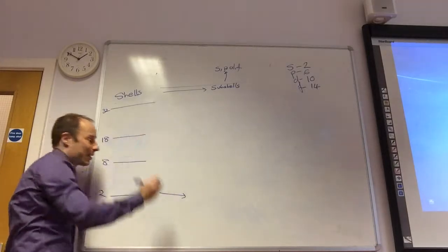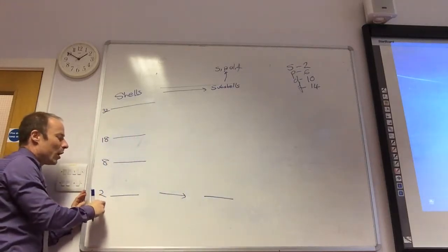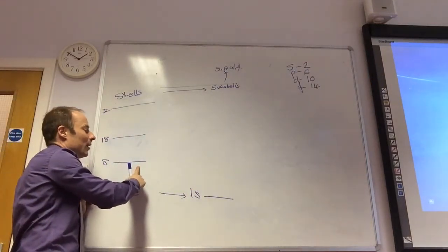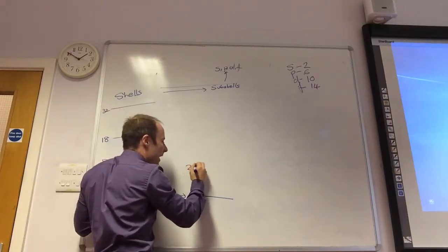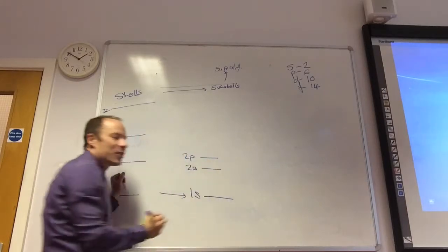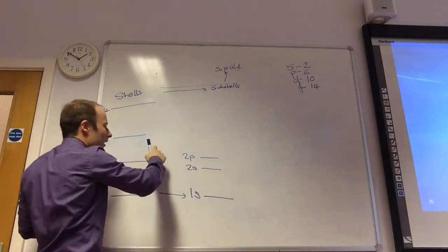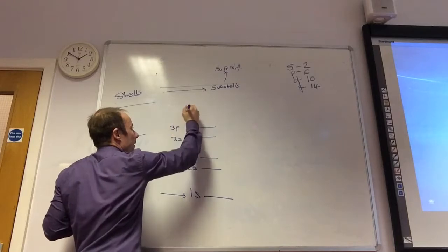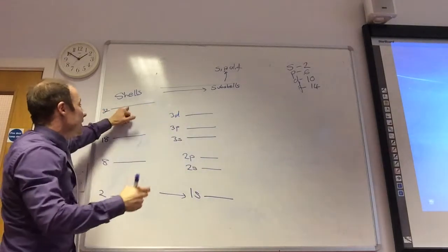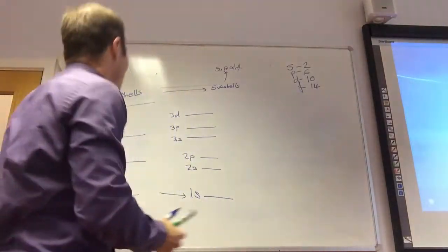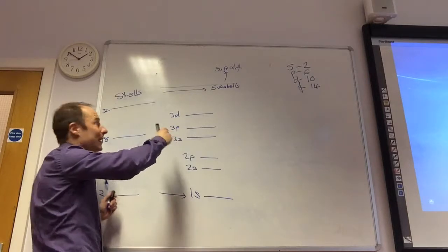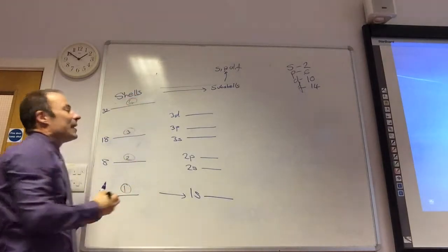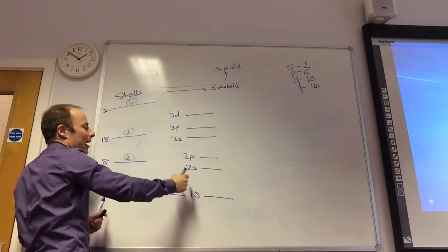How many sub-shells make up the first shell? One. One S. S orbital. When we call that, this is shell number one, so we call that the one S sub-shell. What about this guy here? Two is going to be the 2S and then the 2P at a slightly higher energy. This guy here? The 3S, the 3P, and the 3D.